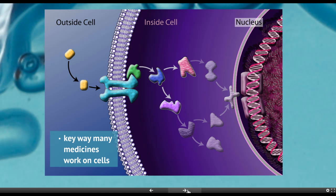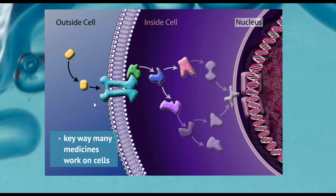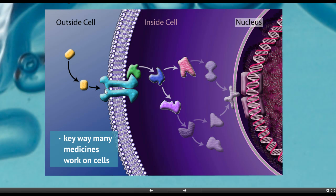This is also a key way that many medicines work on cells. You could develop your own chemical that fits in and stimulates the action of a signal transduction pathway. Or if the signal transduction pathway is working too much, you can develop a drug that fits in here and blocks it, so that the hormones or other proteins produced by the body can't trigger it, and we stop the pathway. About 60% of medications work this way.